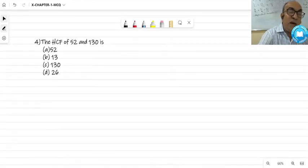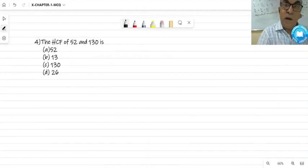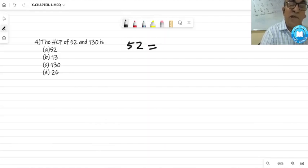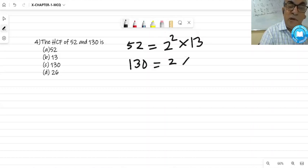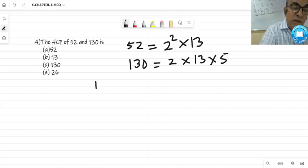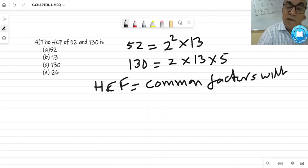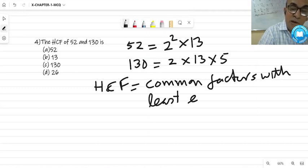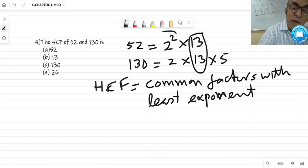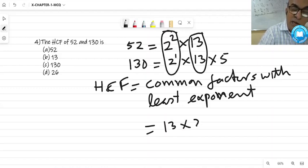Now the next one, you have to find the HCF of 52 and 130. We have only one method, that is fundamental theorem of arithmetic. There you have to factorize. 52 is 4 into 13, which is 2 square into 13. And 130 is 2 into 13 into 5. HCF is product of common factors with least exponent. 13 is common with power 1, and 2 is also common but least exponent is 2 power 1. So answer will be 26.